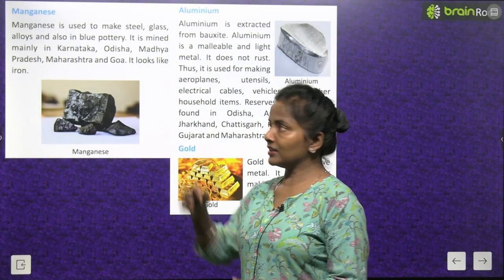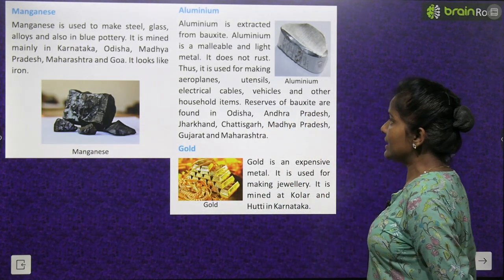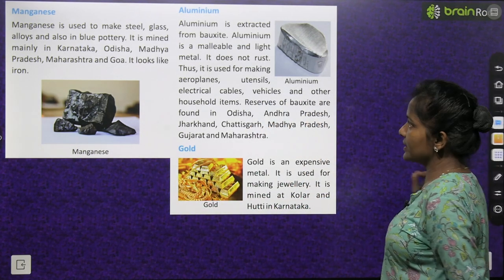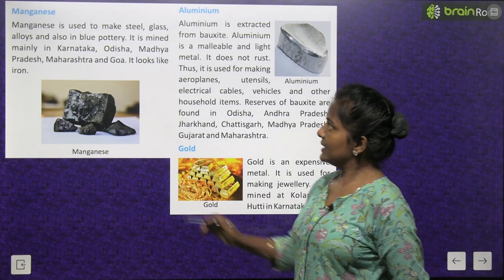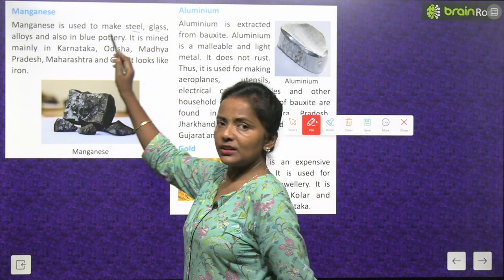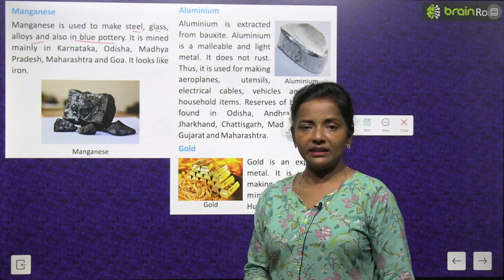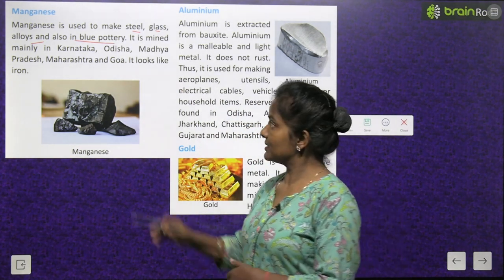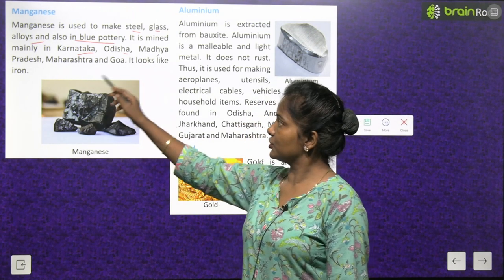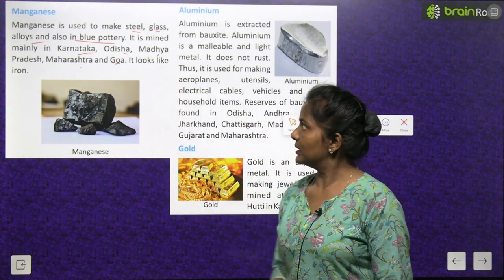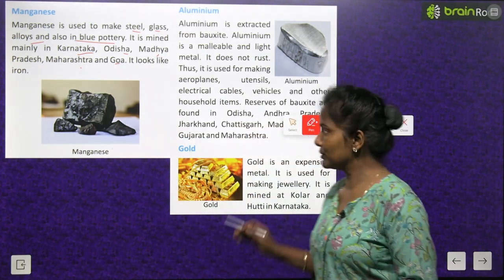Then comes manganese. Manganese is used to make steel, glass, alloys, and also in blue pottery. It is mined mainly in Karnataka, Odisha, Madhya Pradesh, Maharashtra and Goa. It looks like iron — ye dekhne mein iron ki tarah hi hota hai.